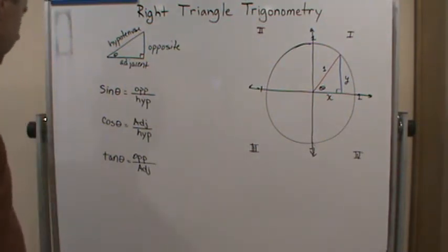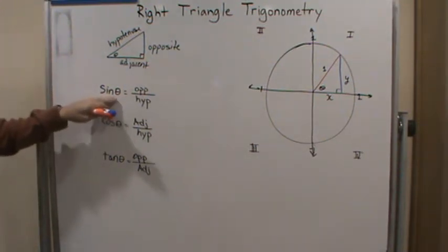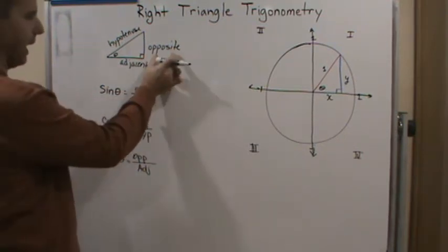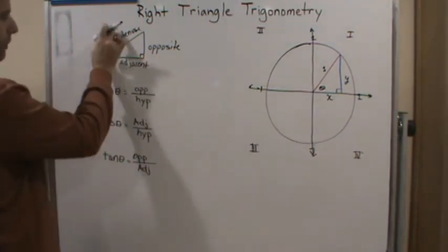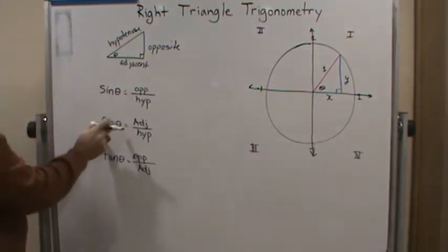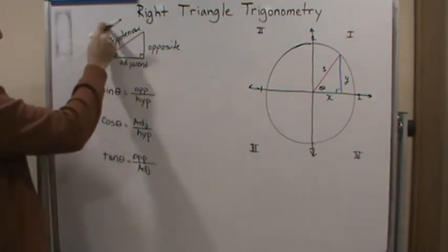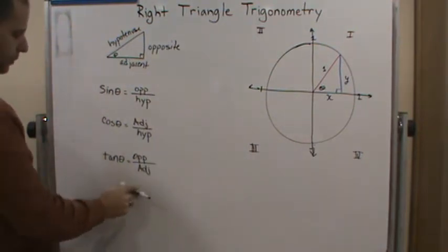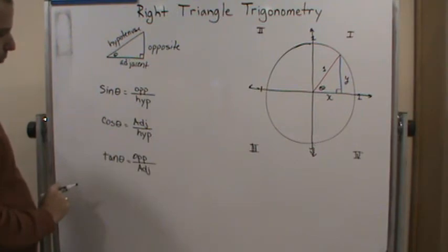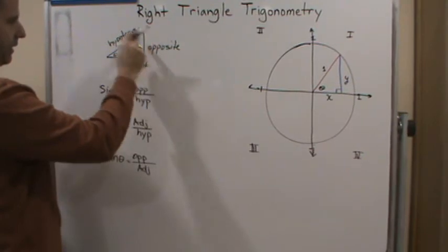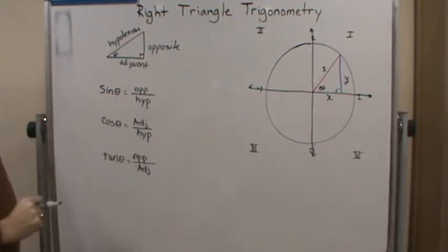And so, to define sine of the angle, it's opposite over the hypotenuse. So, it's the measurement of the opposite side over the measurement of the hypotenuse. And then cosine theta is the measurement of the adjacent side divided by the measurement of the hypotenuse. And then tangent theta is defined as the measurement of the opposite leg divided by the measurement of the adjacent.